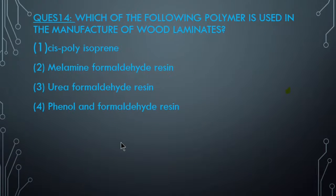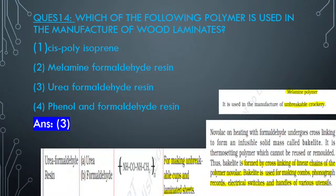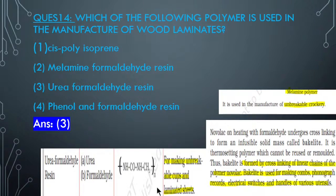Question 15: Which polymer is used in manufacture of wood laminates? Answer is option 3 - urea formaldehyde resin. You will find this in the important table. Urea formaldehyde resin is mentioned as used for making unbreakable cups and laminate sheets - same as wood laminates. Also read uses of melamine and Bakelite: Bakelite is used in making combs, phonograph records, electrical switches, and handles of various utensils.